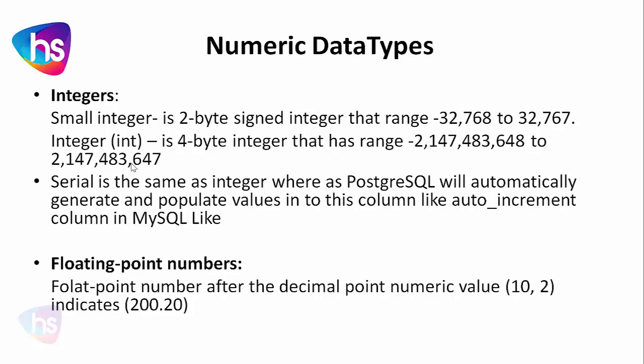By default, the increment is plus one. In PostgreSQL, there is a SERIAL data type — once you define a column ID with a data type of SERIAL, it will take care of the auto-increment automatically.